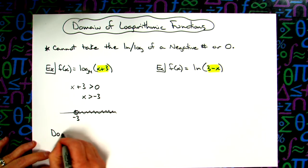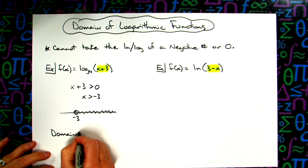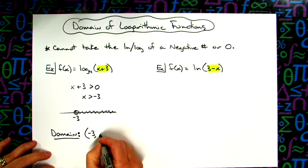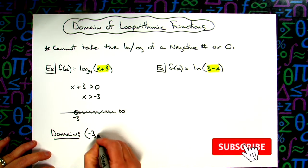So then my domain, written in interval notation, is going to be a curvy bracket on negative 3, all the way up to positive infinity on the number line.